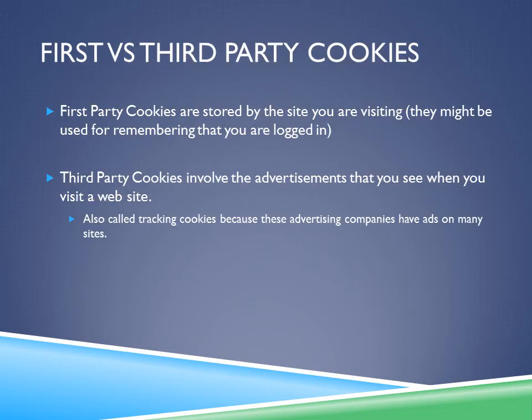First versus Third-Party Cookies. First-party cookies are stored by the site you are visiting and might be used for remembering that you are logged in if the site involves a login and password. Third-party cookies involve the advertisements you see when visiting a website. They are also called tracking cookies because advertising companies place ads on many sites, and reading the same cookie across each site allows them to identify you as the same user. Your browsing habits help them display targeted advertisements that suit your interests.